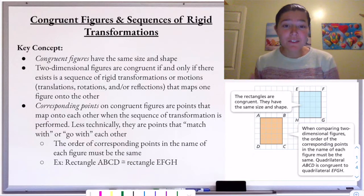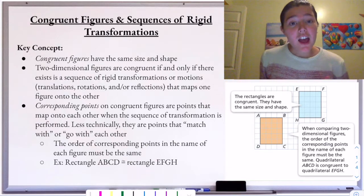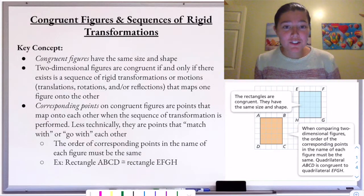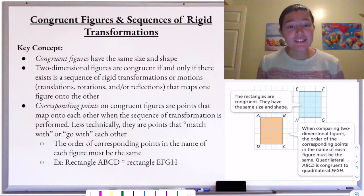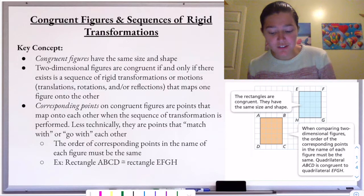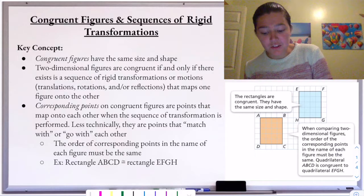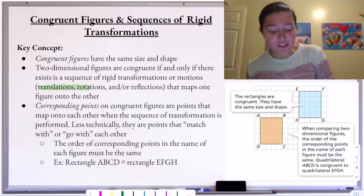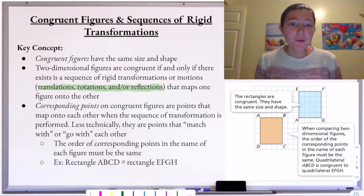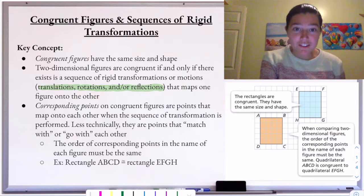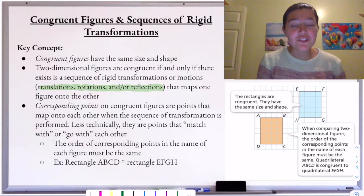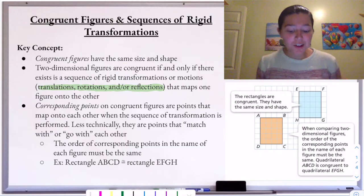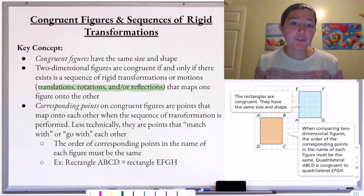So if I am given two figures and I'm asked are these two figures congruent, I can say yes, they are, because there exists a sequence of rigid transformations — which include translations, rotations, and reflections — that will map my original figure onto the other figure. If such a sequence exists, then we know those two shapes are congruent.